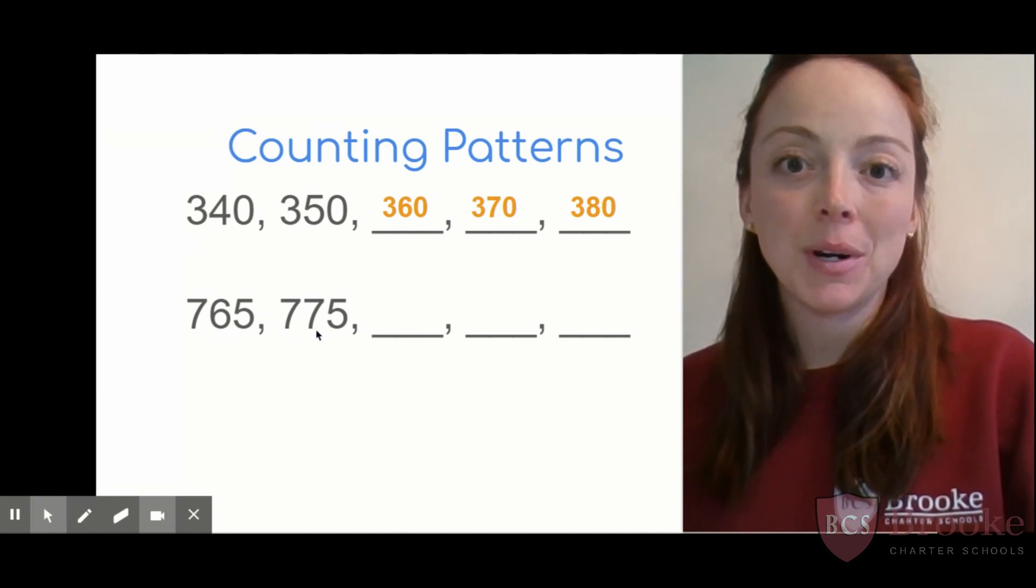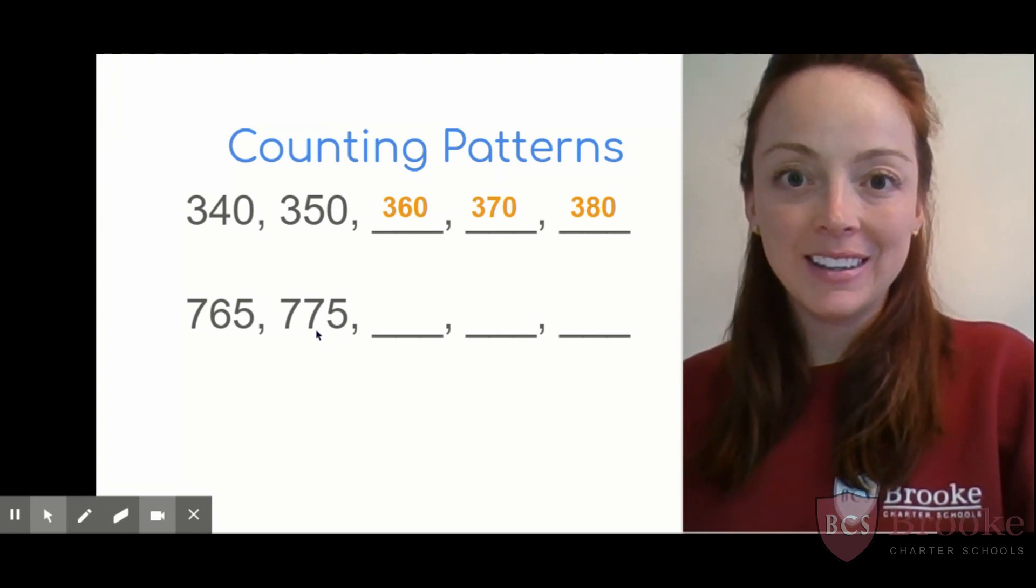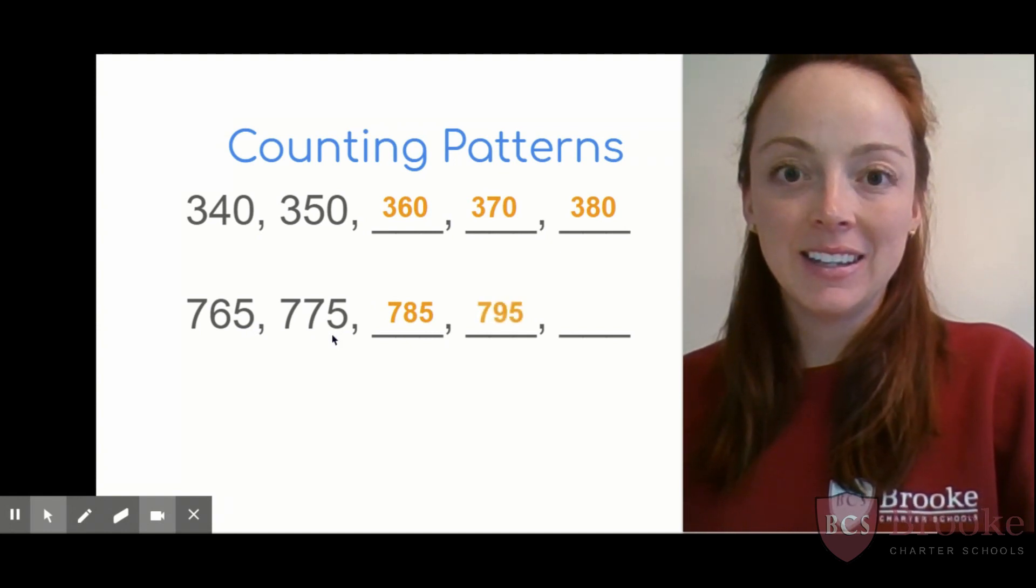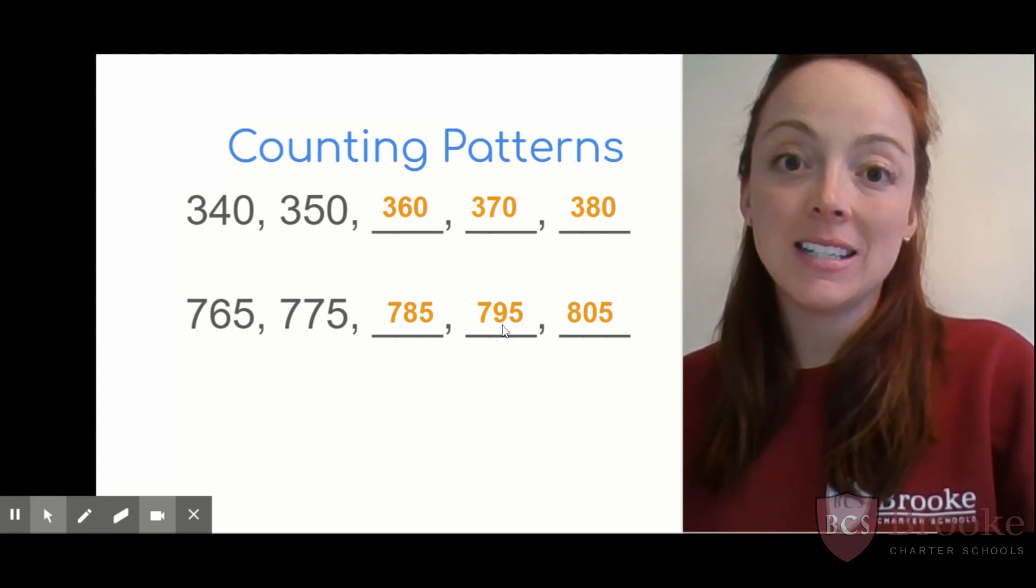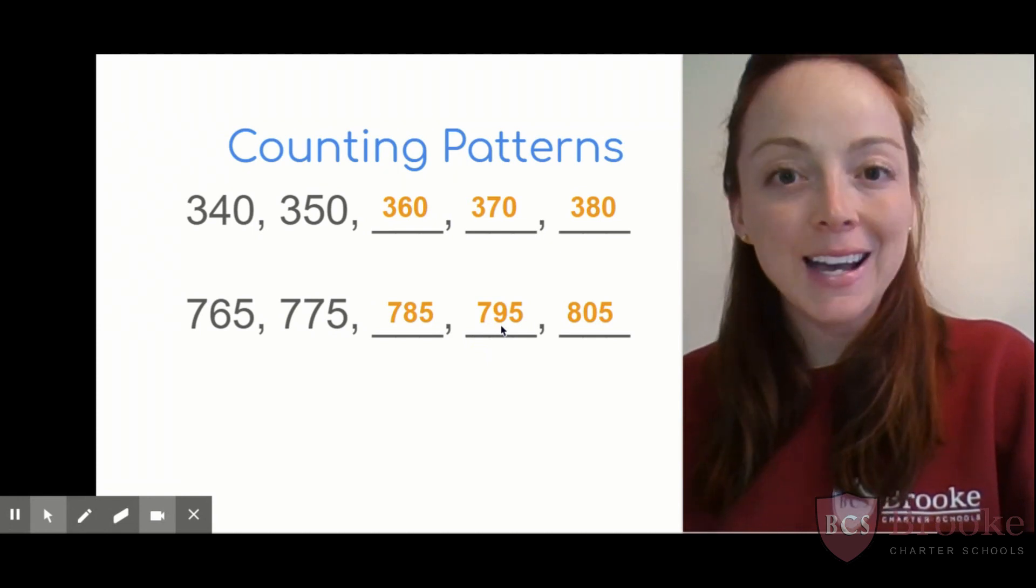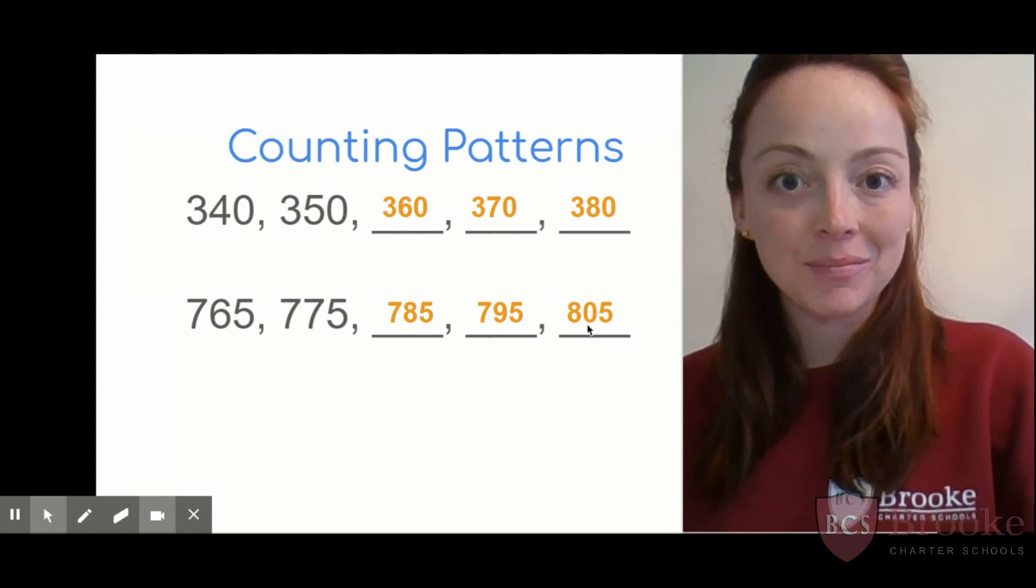Fill in the next three numbers, get to work. Let's count together and see if you're right. 765, 775, 785, 795, and 805. Nice job. We know when we go from nine tens to ten tens, ten tens is really just a group of exactly 100. So I move that hundred over to the hundreds place, and then I go back to zero tens and start over. Last one.